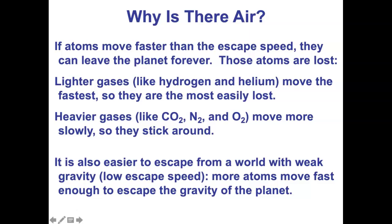You can have a planet with weak gravity and it can still hold on to an atmosphere if it's cold enough. Titan, the largest moon of Saturn, has very weak gravity, and yet Titan has an atmosphere because it's orbiting Saturn and is very cold. Hot Jupiters orbit very close to their stars and are very hot, yet they can hold on to light gases like hydrogen and helium because they are Jovian mass — the mass of Jupiter or even more massive.